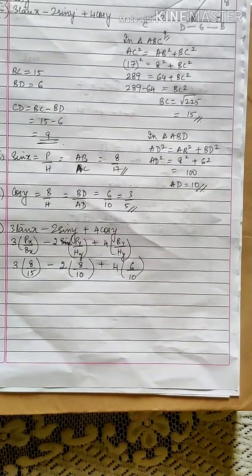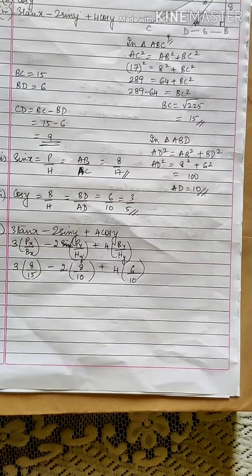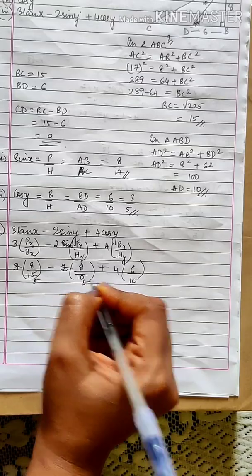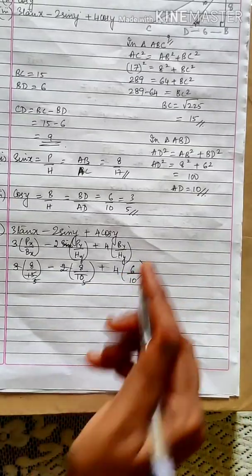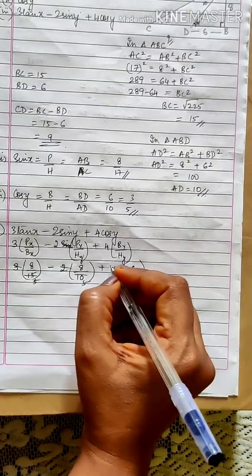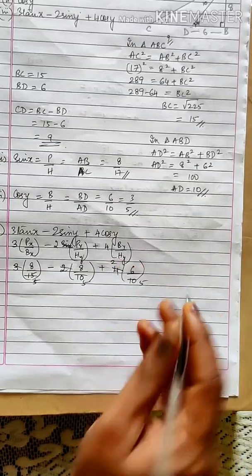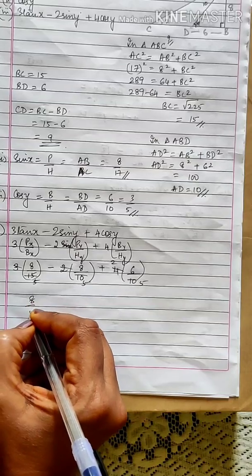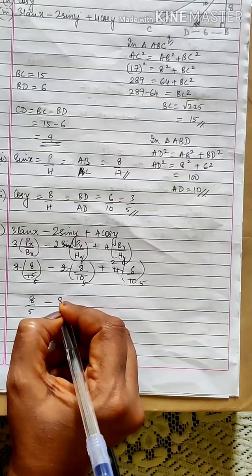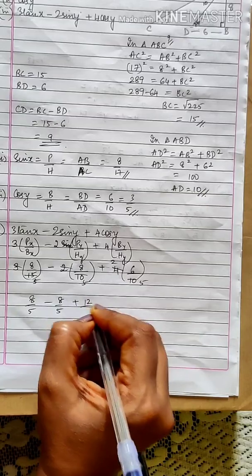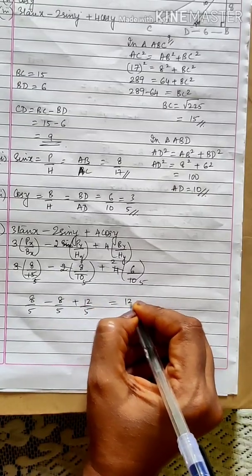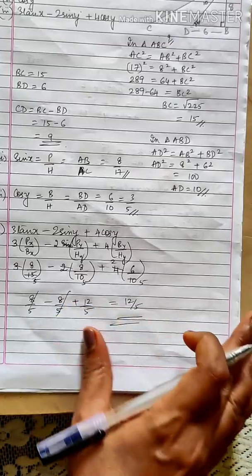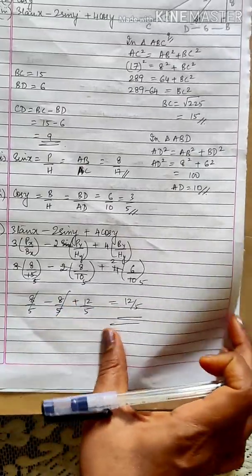So you get 3 times (8/15) minus 2 times (6/10) plus 4 times (6/10), which simplifies to 8 upon 5 minus 8 upon 5 plus 12 by 5. The 8 by 5 and minus 8 by 5 get cancelled, so the answer is 12 by 5.